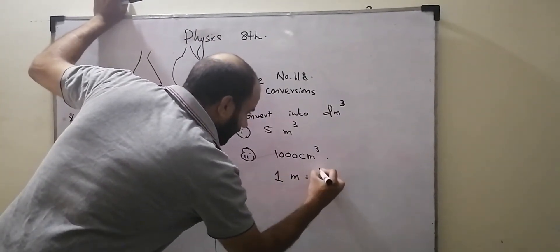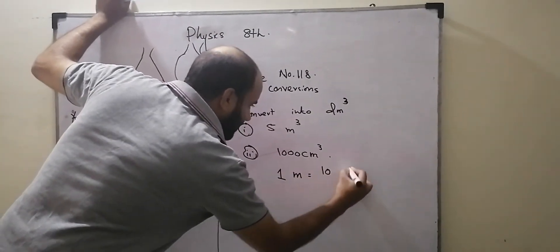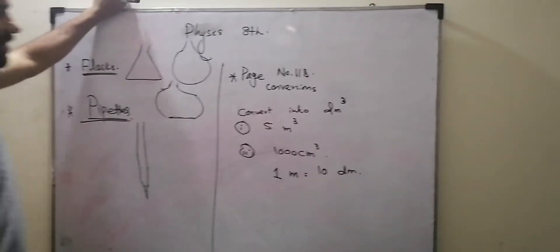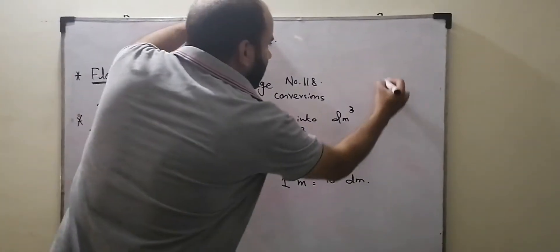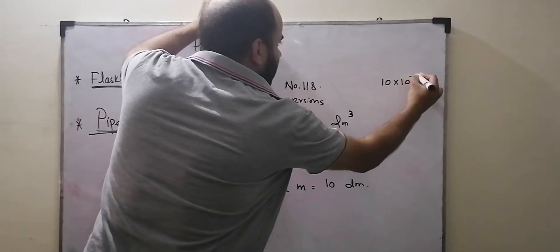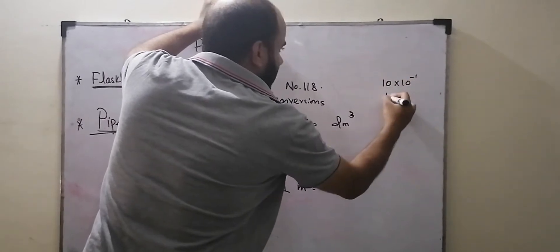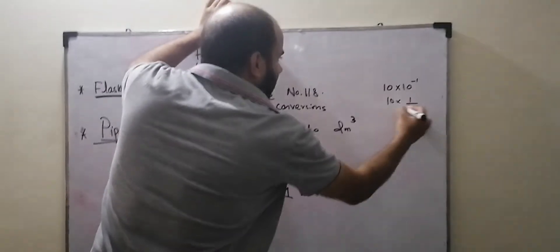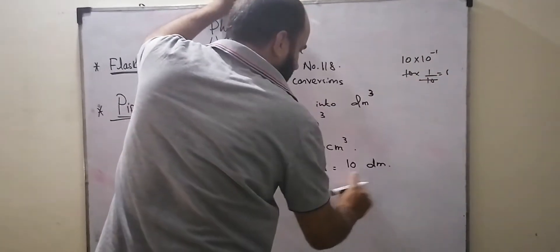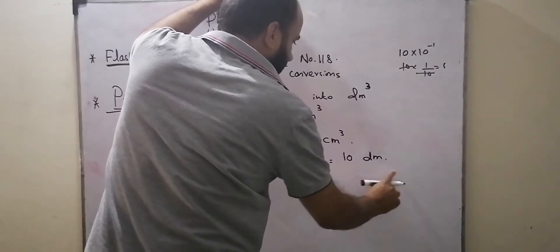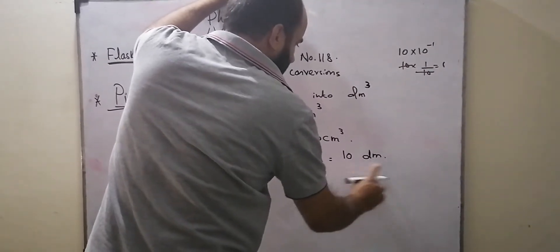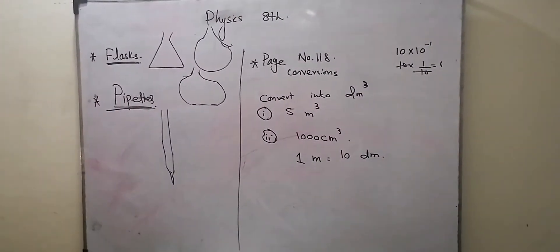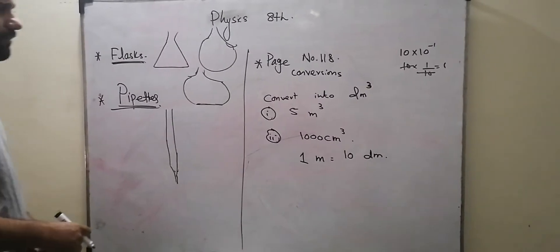The basic concept is that 1 meter is equal to 10 decimetres. Since deci means 10 to the power of minus 1, if you multiply it by 1, it is still 1 meter. So 1 meter equals 10 decimetres.